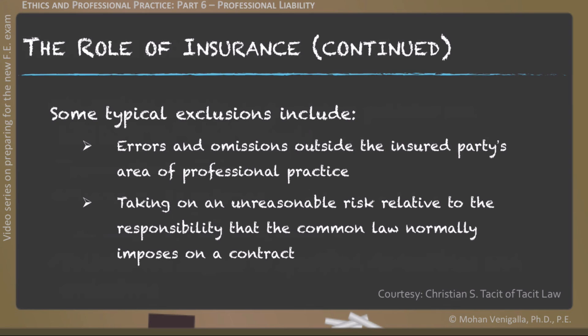Typical exclusions for professional liability insurance include errors and omissions outside the insured party's area of professional practice. For example, if you are a civil engineer and you try to do work in mechanical engineering — not your area of expertise — the insurer will more than likely not cover your liability. Also, taking an unreasonable risk related to responsibility that common law normally imposes on a contract may not be covered.